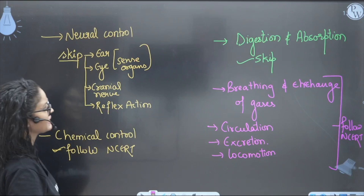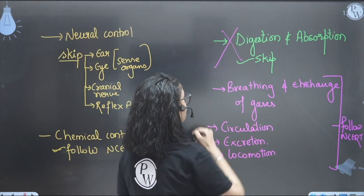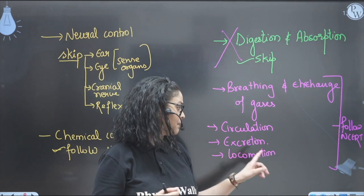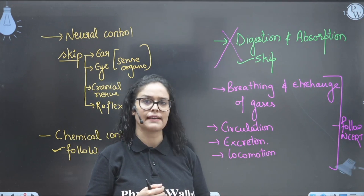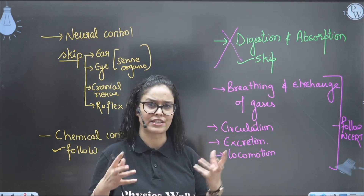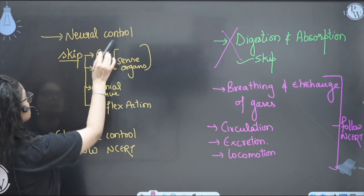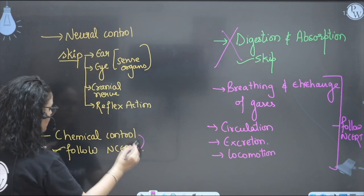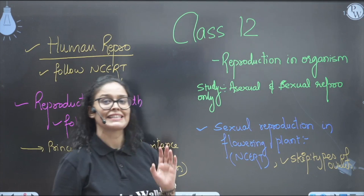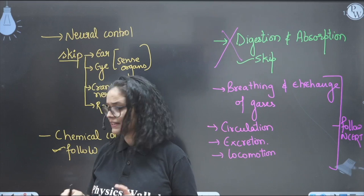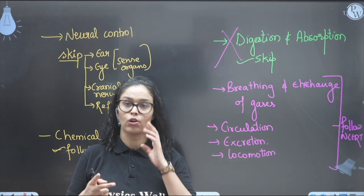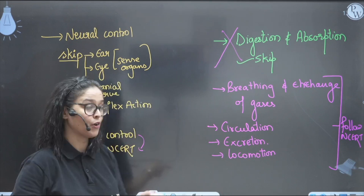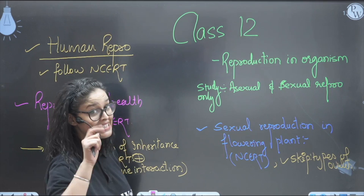For plant growth and regulators, follow NCERT. For digestion and absorption, skip the complete chapter. For breathing and exchange of gases, circulation, body fluid and circulation, excretion and elimination, locomotion and movement - follow NCERT for these, as you will get hardly one or two questions from each. For neural control and coordination, skip sense organs, cranial nerves, and reflex action. For chemical control, follow NCERT. That covers Class 11th.